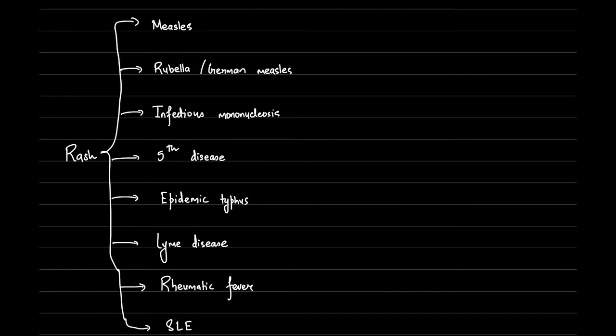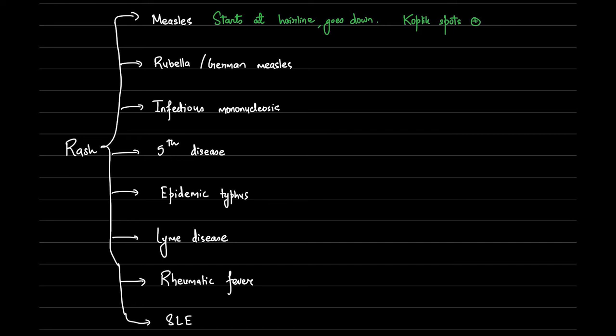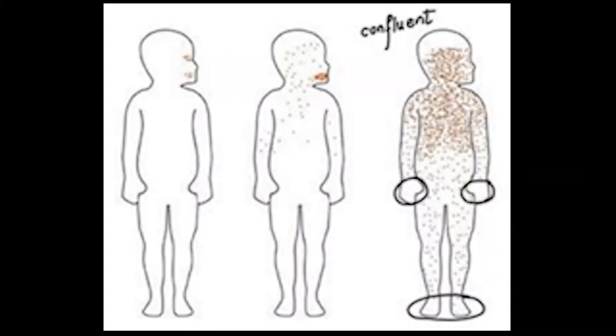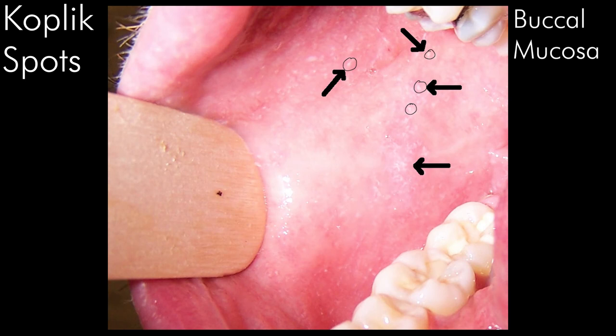Here is a list of all the diseases which are classically associated with a central maculopapular rash. We will go over them one by one while discussing the characteristics of the rash and differentiating features. The rash in measles starts at the hairline and moves down the body; it starts as a discrete lesion but as it spreads it becomes confluent. The high yield point here is that it spares the palm and soles. Koplik spots are pathognomonic for measles and are white or blue lesions on the buccal mucosa, seen when the initial symptoms appear.